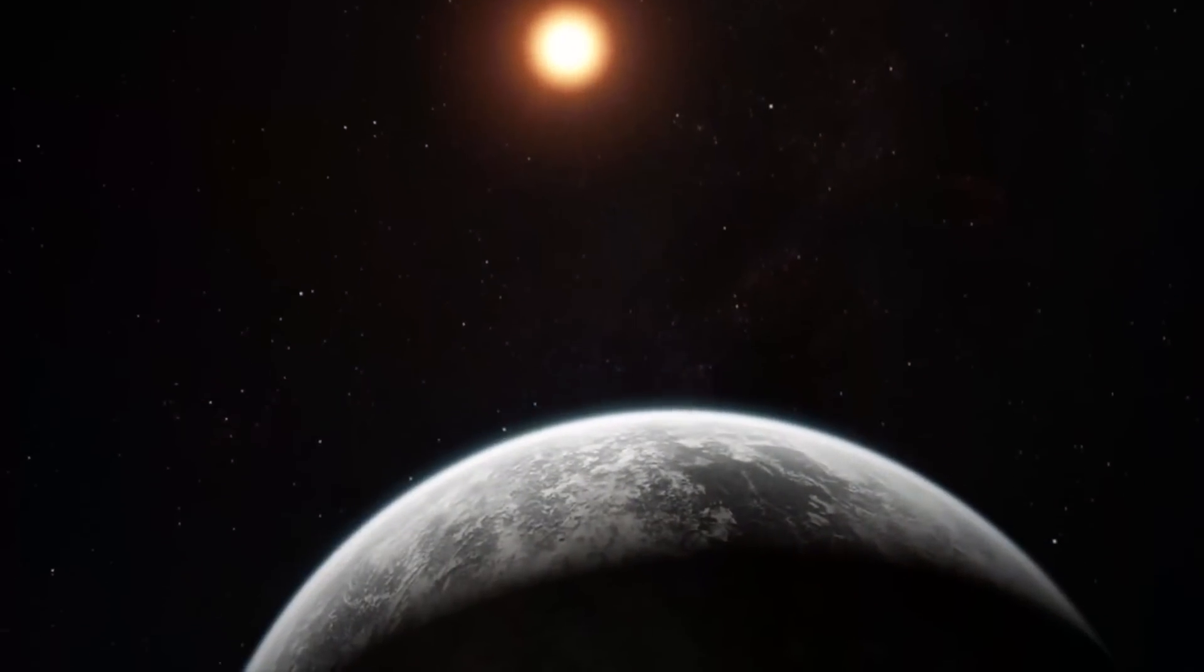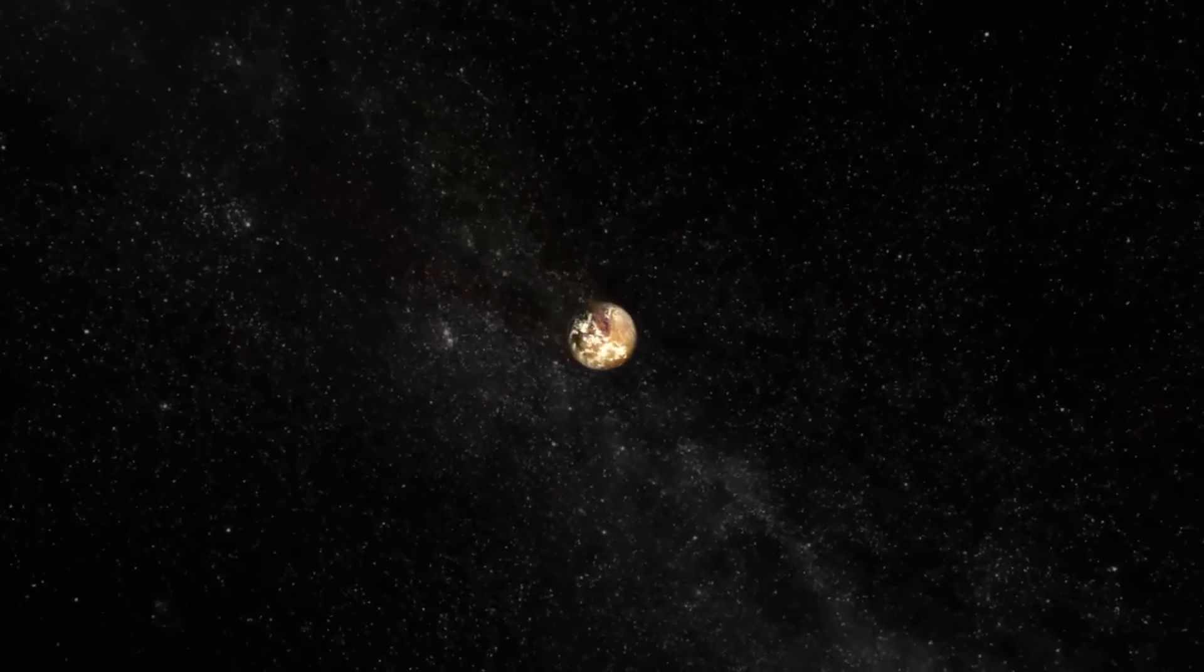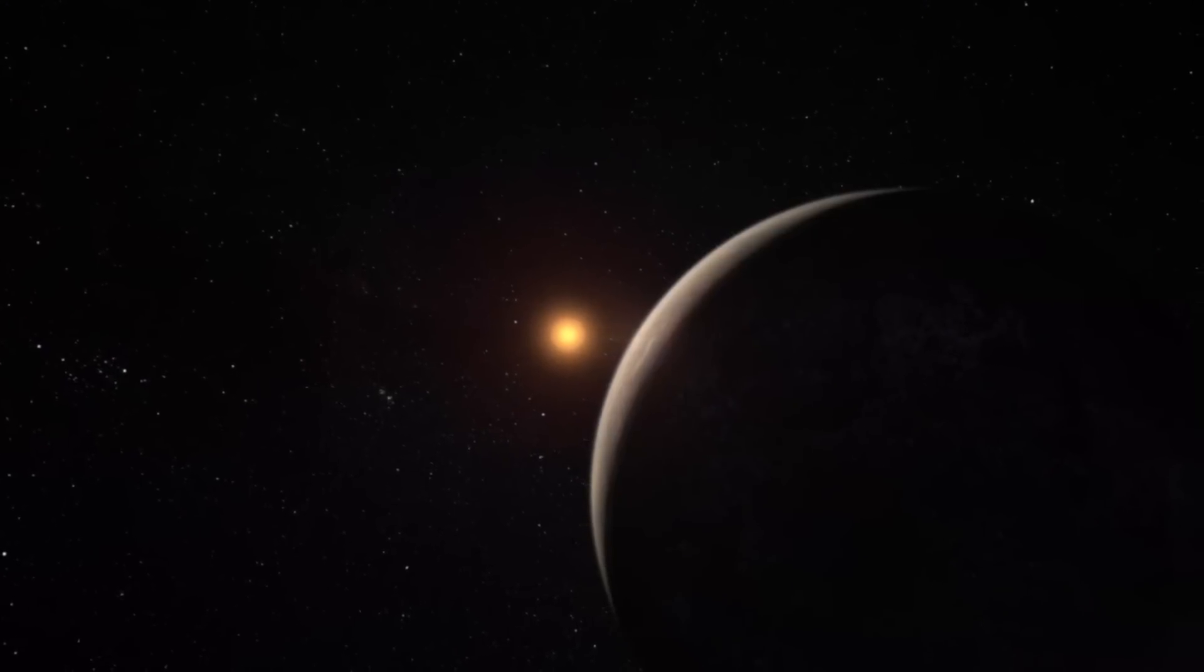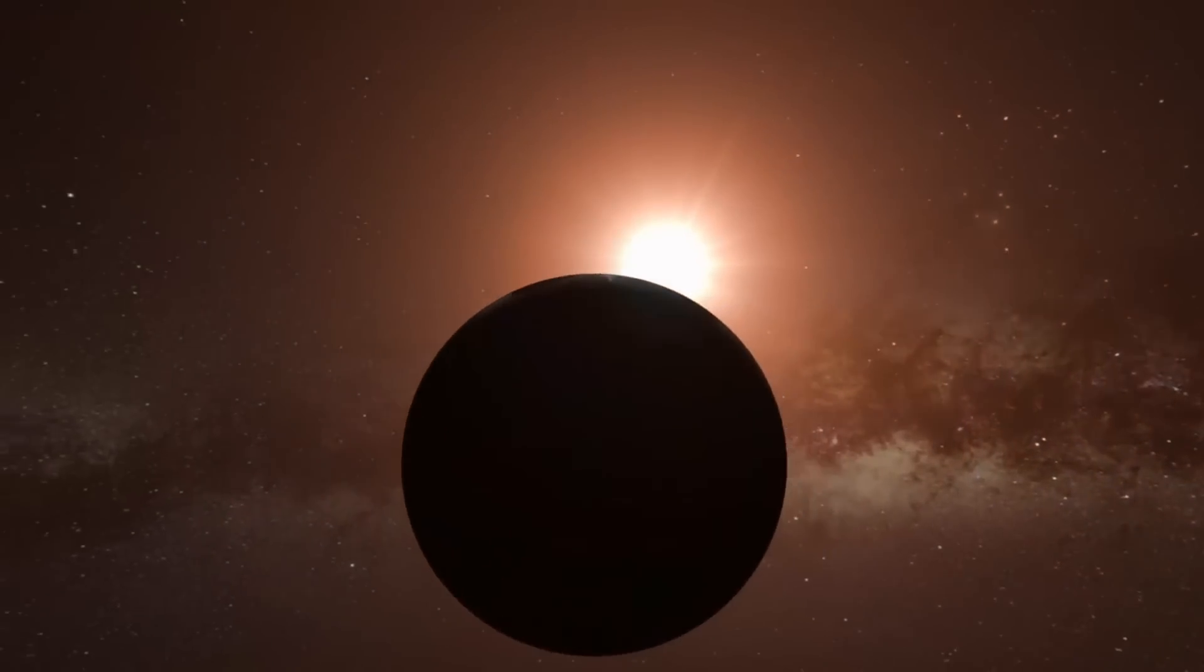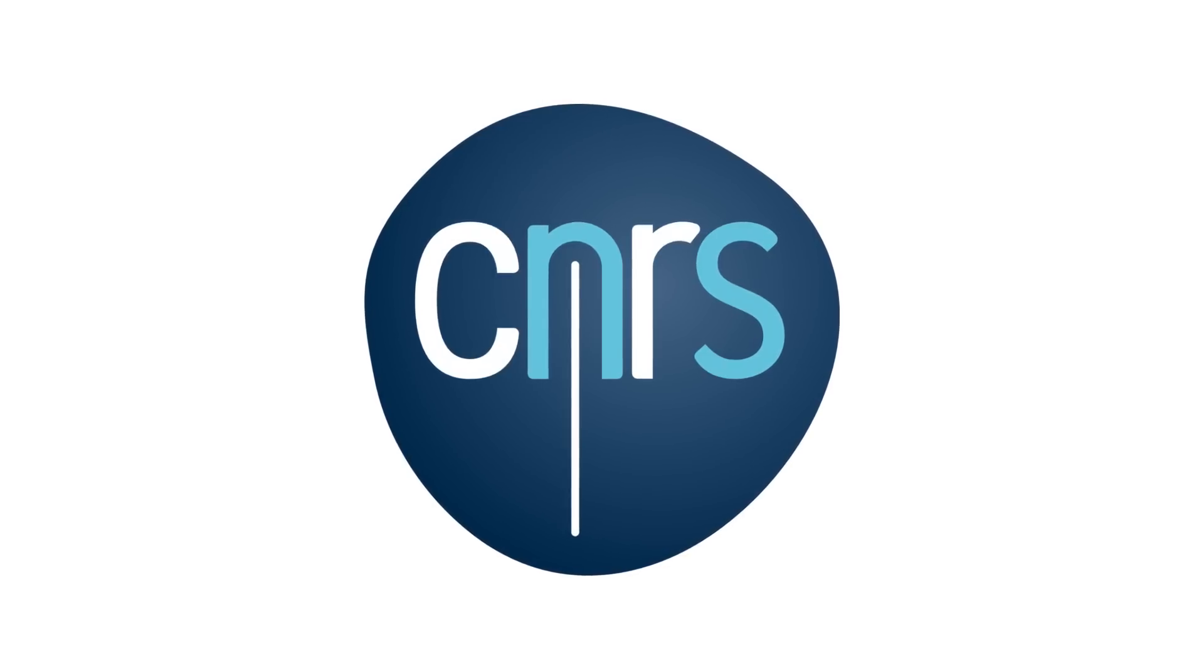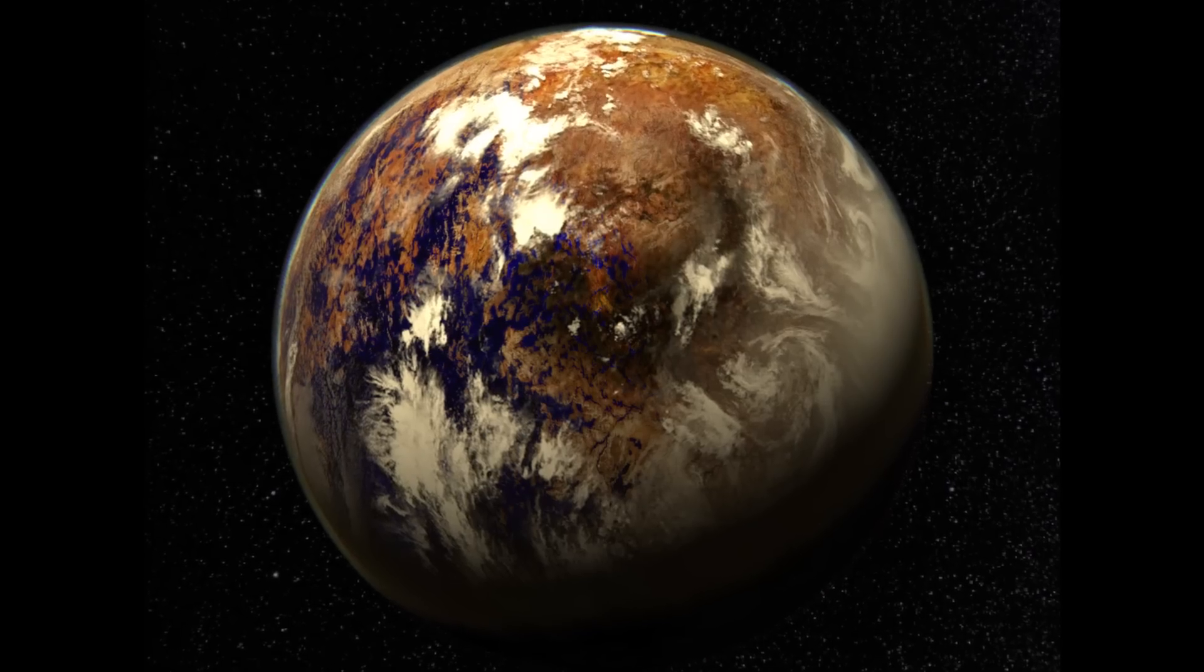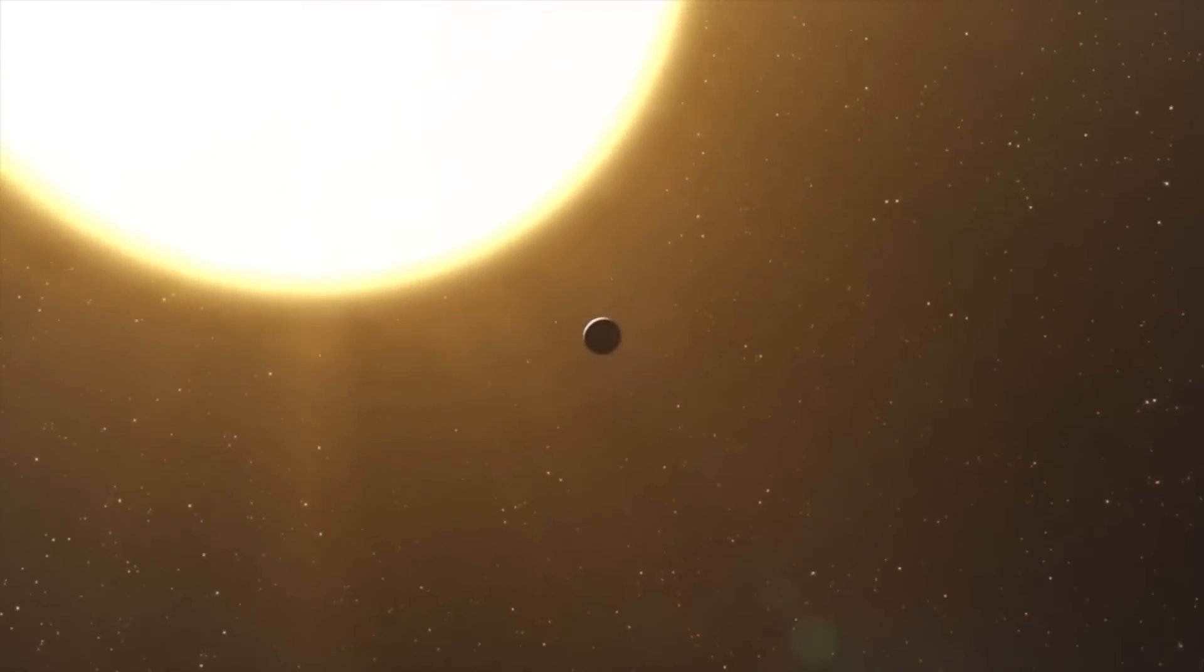Compared to Earth, Proxima b is thought to be subjected to pressures of more than 2,000 times what we experience. Coupled with the radiation from its host star, it's possible that the exoplanet would have no atmosphere to sustain life. In October of 2016, researchers at the National Center for Scientific Research in France hypothesized a chance for surface oceans and a thin atmospheric layer, though proof has yet to be discovered.